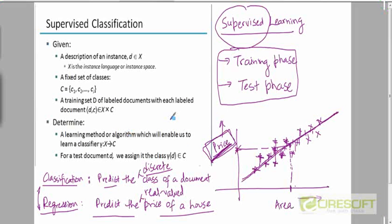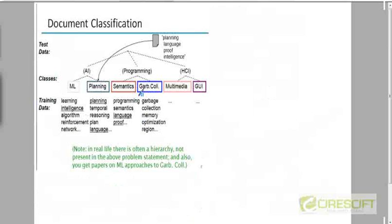We are looking at classification, and we are going to particularly look at text classification. We have a discrete set of predefined classes and we want to predict the class of a new document.